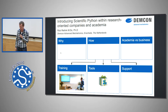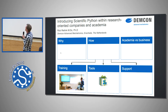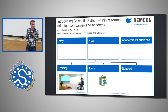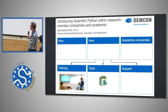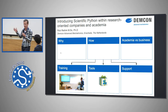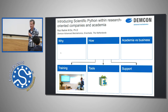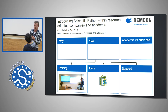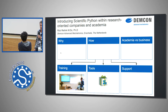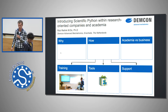My name is Rob Reilink. My poster is entitled 'Introducing Scientific Python within Research-Oriented Companies and Academia.' I assume all of you are using Python, but probably a lot of your colleagues are not, and maybe they should also adopt Python as their research tool. At the company I work for, Demcon, which does contract R&D and engineering, we have transitioned from using Excel and MATLAB to using Python over the last year. On my poster I'll tell you why this is a good idea, how you can transition your group, what kind of training and tools you need, how to support your colleagues, and the differences between academia and companies.